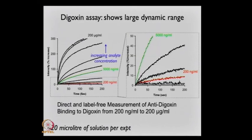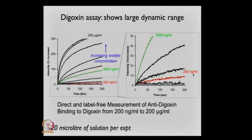Basically, we are looking at the intensity of light as a function of time as we introduce anti-digoxin to bind to digoxin, which has been immobilized on the glass surface. You can see that when the analyte — when the anti-digoxin is 200 micrograms per mil — you get the uppermost curve. As I decrease the analyte concentration, you get lower and lower curves, down to 200 nanograms per mil. On the right-hand side, we blow it up so you can see 200 nanograms per mil.